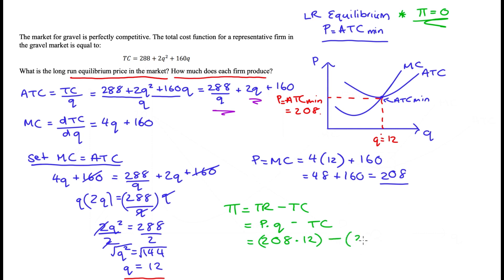minus 288 plus 2—now quantity is 12 squared—plus 160 times 12. Now I just use my calculator for this, and you might have to get yours out as well. But 208 times 12 is 2496, and we take away—so 288 plus 12 squared is 144 times 2, that's 288 again, plus 160 times 12, is actually 1920.